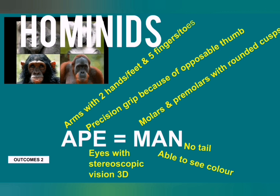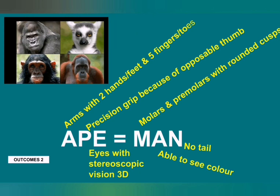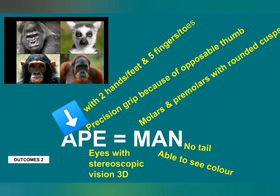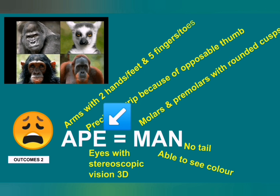The acronym APE = MAN will help you remember the six traits that apes and humans have in common. The first A stands for arms with hands with five fingers and two feet with five toes. The P is for precision grip, because of an opposable thumb — precision grip is only possible because the thumb points in a different direction to the four fingers, giving a stronger and more articulate grip. The E is for eyes with stereoscopic vision: since both eyes face forward and our eye sockets are at the front of our skull, we have depth perception and can see in 3D.